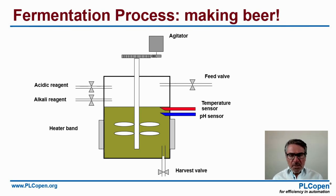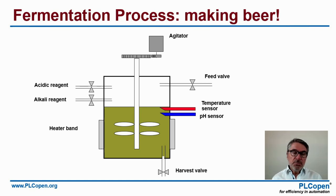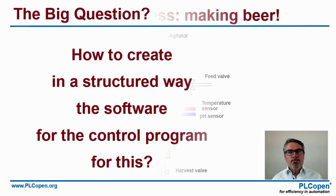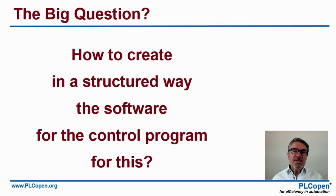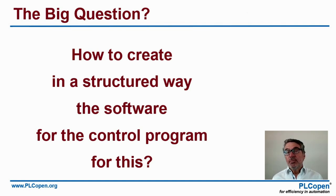We have a temperature sensor to check on the temperature, and a pH sensor to check on the pH value. Now the big question: how do we create, in a structured way, the software for the control program of this system?